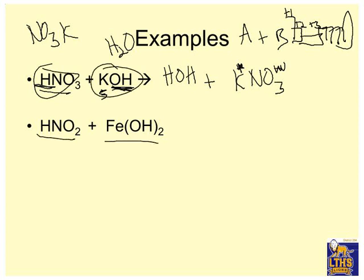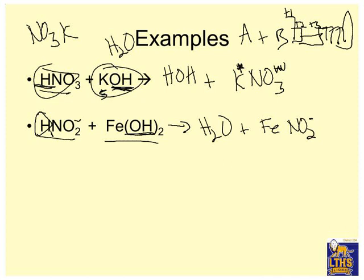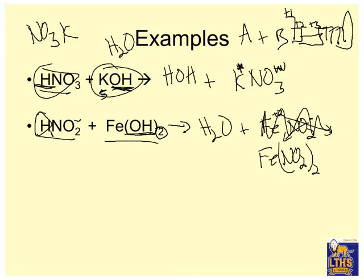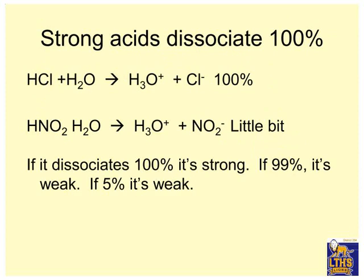Then I have HNO₂ and Fe(OH)₂. We've got H giving, and then OH is going to take it, so H₂O or HOH. And then I'm going to have Fe(NO₂)₂. Now, NO₂ over here, since I have one H, is negative 1. And iron here, since I have a 2 over here, is going to be plus 2. So that means when I rewrite this, I should crisscross this, and get Fe(NO₂)₂. So what I end up with for each of these is, of course, water and a salt. And a salt is something that starts with a metal and ends with a negative ion.